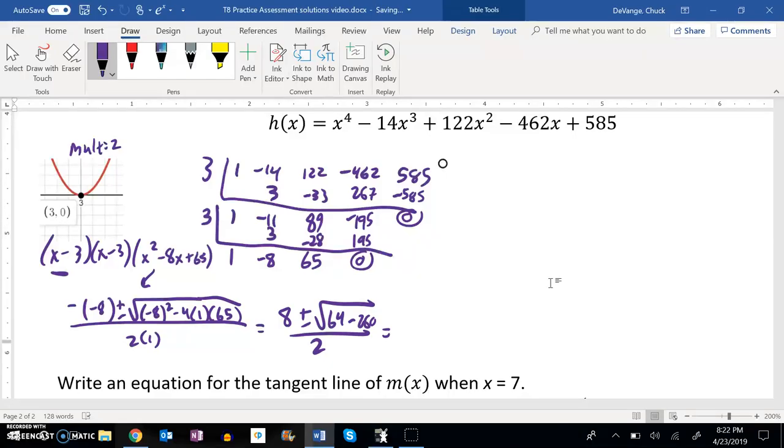I'll keep going from there. That is 8 plus or minus the square root of negative 196 over 2, which this is 14i. So I have 8 plus or minus 14i over 2.